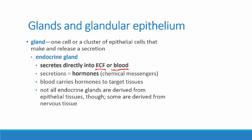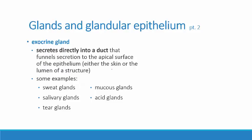So it's not always the case that if something is endocrine, there is an epithelial cell doing the secreting — sometimes it's a nervous cell. Now, the glands we're going to spend more time on in this chapter are the exocrine glands.